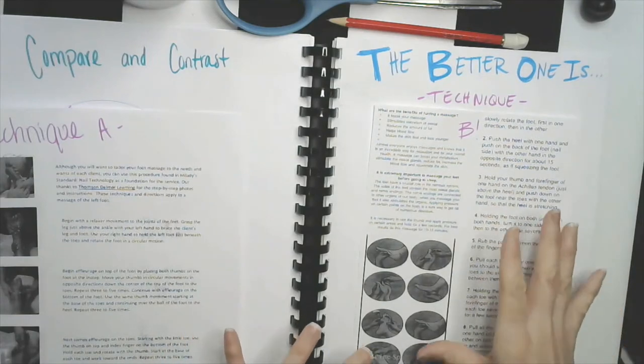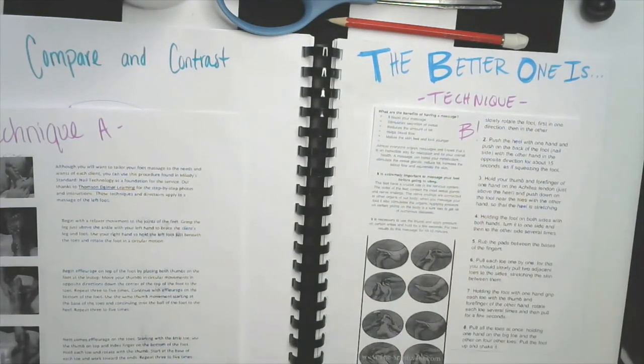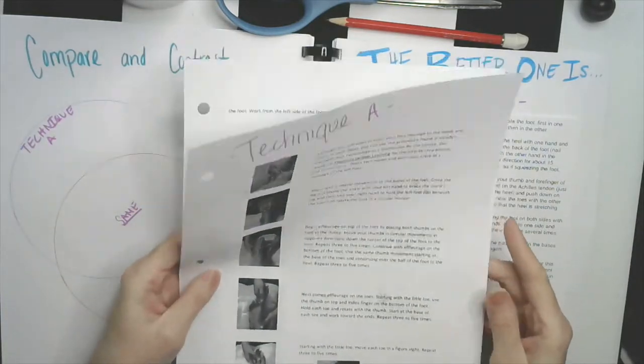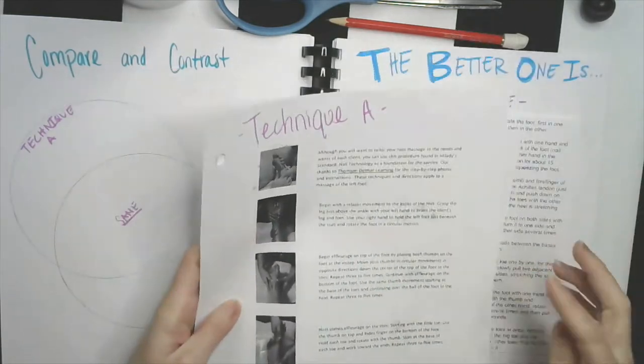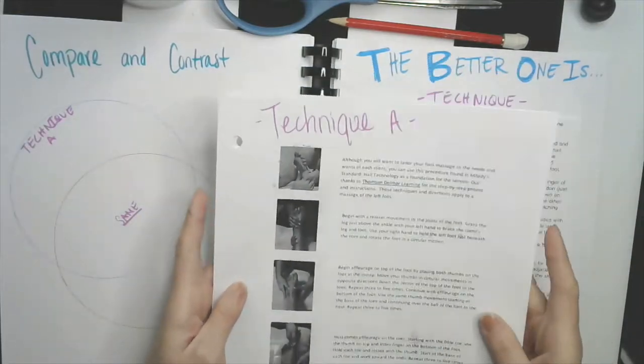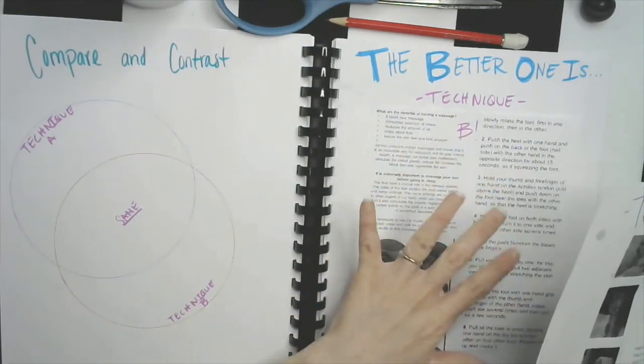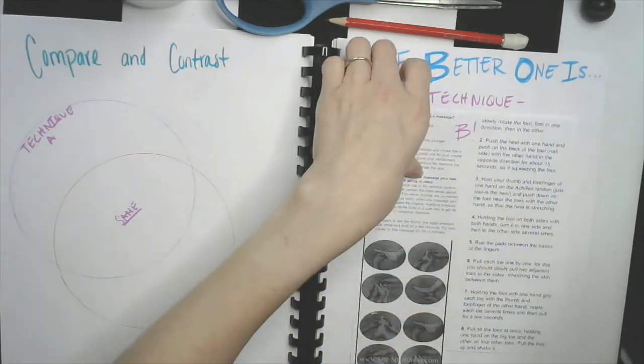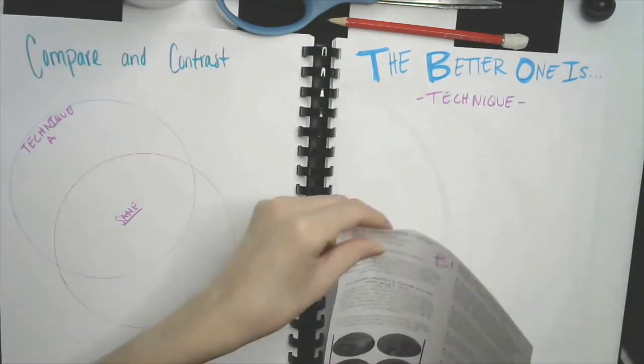If for you technique A is better, although I know it's on two pages, you have to cut and squeeze it on the page. Then glue technique A on this page instead of technique B.